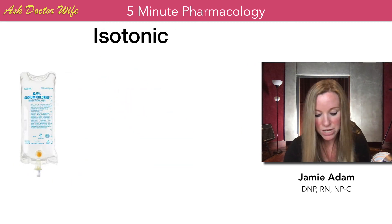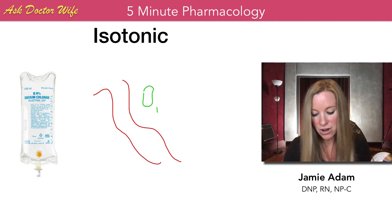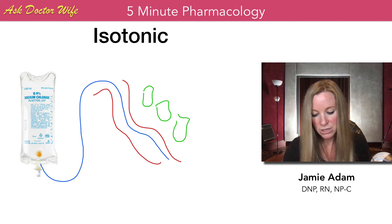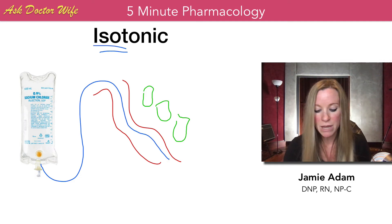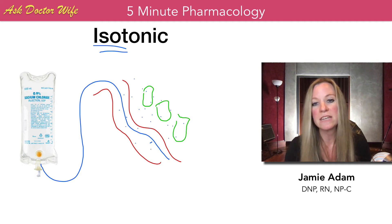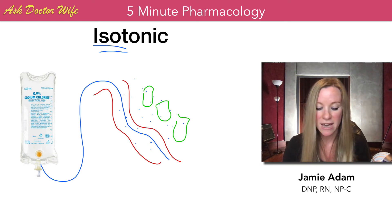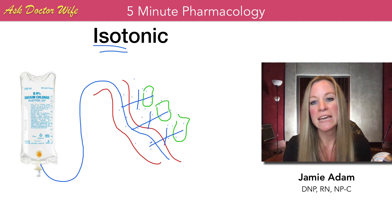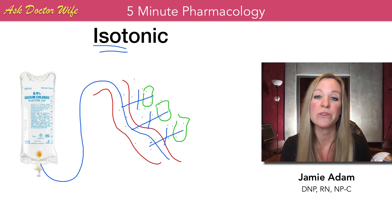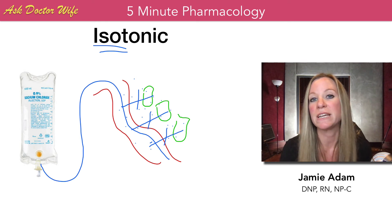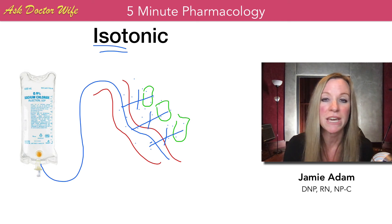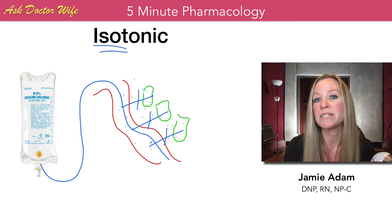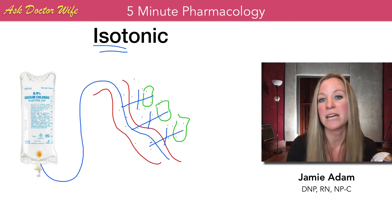Lastly, with an isotonic solution — if this is our bloodstream, these are our cells, and this is our IV solution — iso means same. This solution has the same number of solutes compared to the cells, so there's no movement out of the extracellular space or out of the cells. The cells don't change in size. Because of that, this is a great solution to restore fluid balance — ideal for a patient who has had nausea, vomiting, diarrhea, blood loss, hemorrhaging, surgery, or any general cause of dehydration.